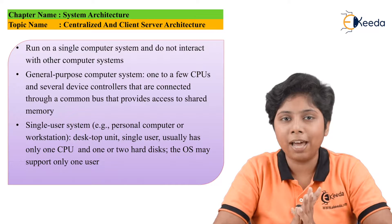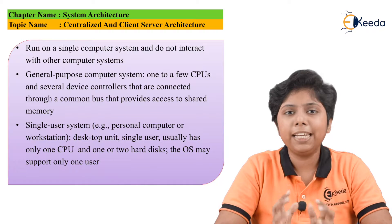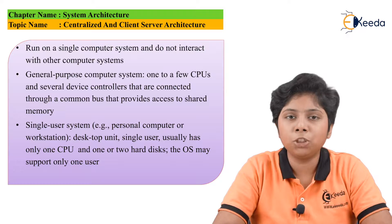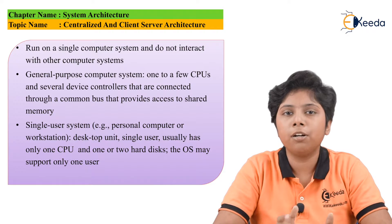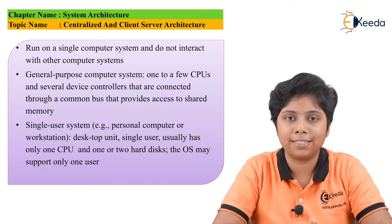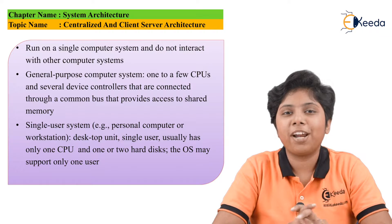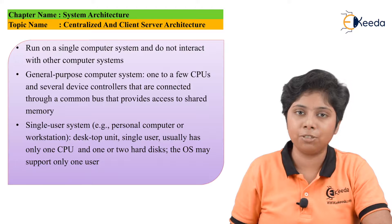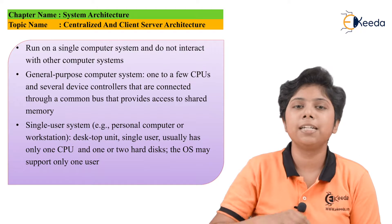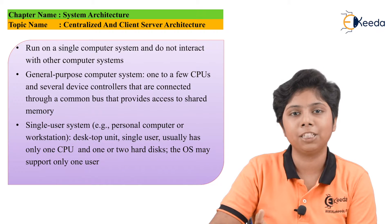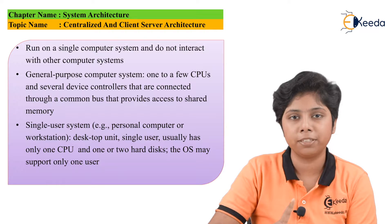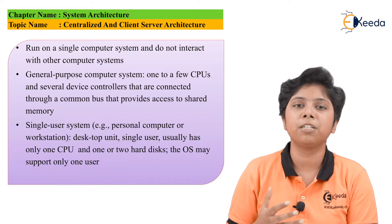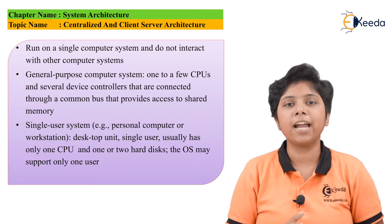The centralized system has a single computer or a single processor, with only one processor as the core processing unit. A centralized system can serve as both a single-user and a multi-user system. In the single-user mode, only one person can access that particular computer system, whereas in the multi-user mode, multiple persons or users can access and use that computer.